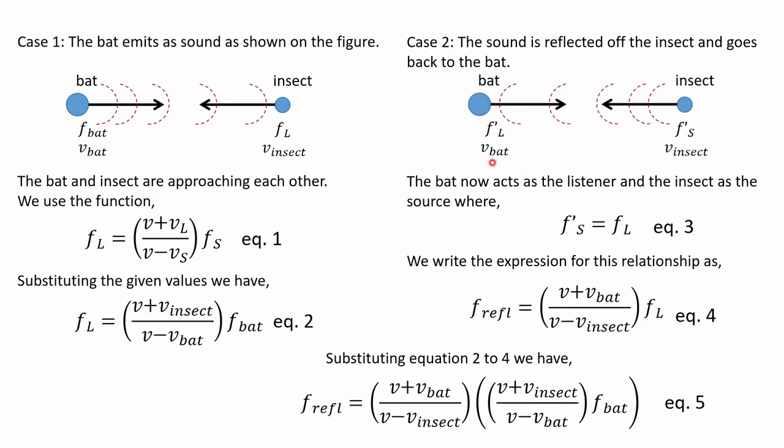f_l prime, which is the frequency heard by the bat coming from the sound reflected by the insect, is now f_reflected. We use the same equation, equation one, because the scenario is still the same—both are approaching each other, so the denominator is minus and the numerator is plus. This time, the v_listener is the bat and the v_source is the insect. Substituting equation two to four, we get equation five.